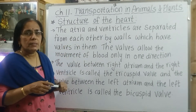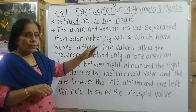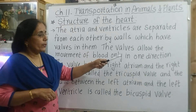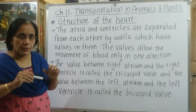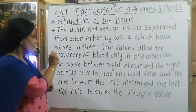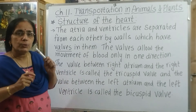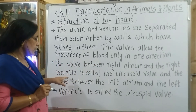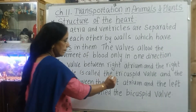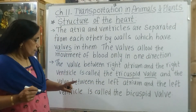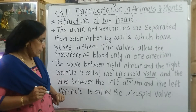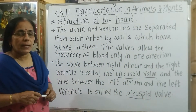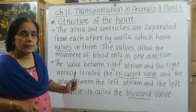The atria and ventricles are separated from each other by valves, which allow the movement of blood only in one direction. The valve between the right atrium and the right ventricle is called the tricuspid valve. The valve between the left atrium and the left ventricle is called the bicuspid valve.